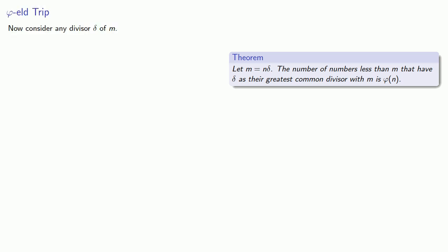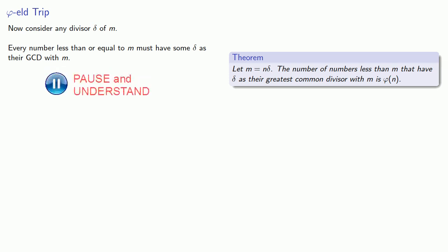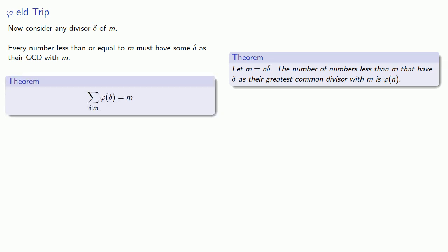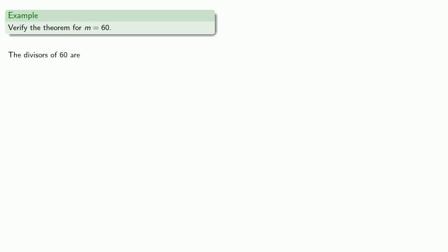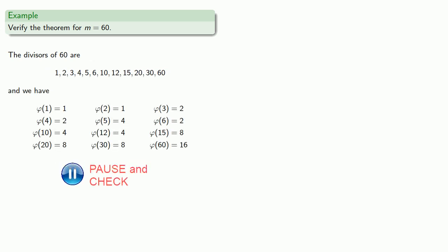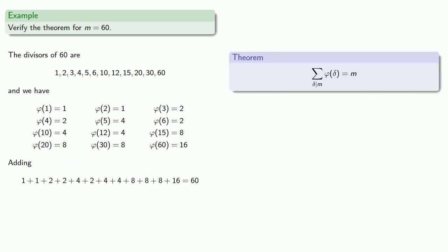Now let's consider any divisor delta of m. Every number less than or equal to m must have some delta as its greatest common divisor with m. Since the number of numbers less than m with GCD delta with m is phi of n, if we sum up all of these phi values over all divisors delta of m, that must account for all numbers, giving us m itself. We can verify this for m equal to 60: the divisors of 60 have phi values that, when summed, do in fact give 60. And as with many things in number theory, it's not immediately obvious why this is important, but it turns out this is the basis for an extremely important result in number theory.